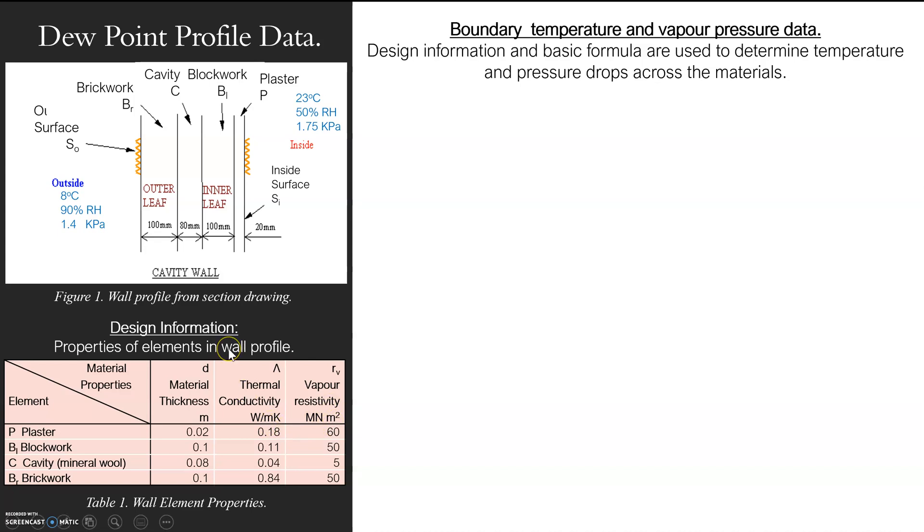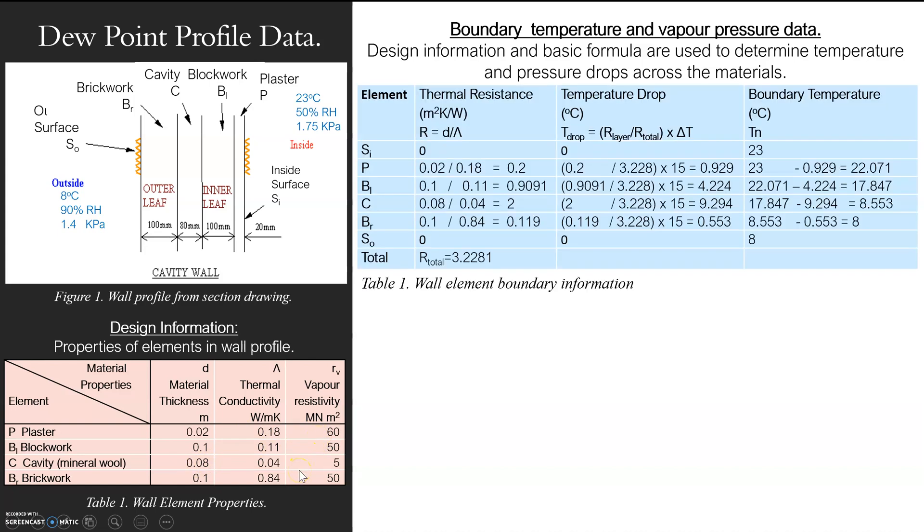So you need to bear in mind you need to get the values the same. So I've got a little table that I'm just showing you for each material, how conductive it is in terms of heat and then how resistive it is in terms of vapor. We need to convert them into resistances because we need to know how resistive it is to temperature and how resistive it is to vapor so that we can plot that information.